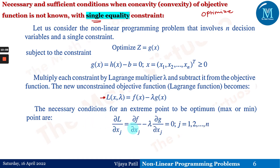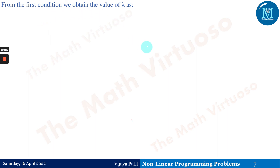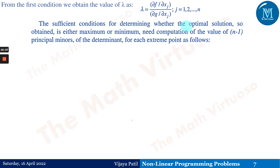The necessary condition is ∂L/∂x_j = ∂f/∂x_j − λ·∂g/∂x_j = 0, along with ∂L/∂λ = −g(x) = 0. From the first condition, we obtain λ = (∂f/∂x_j)/(∂g/∂x_j). The sufficient condition for determining whether the optimal solution is a maximum or minimum requires computation of the values of n − 1 principal minors of the determinant for each extreme point.